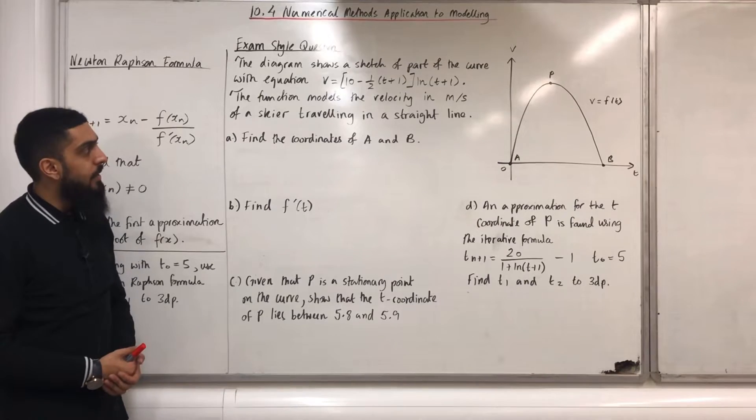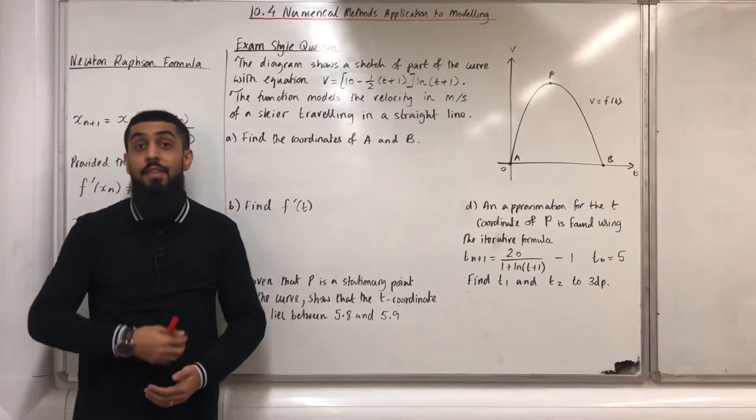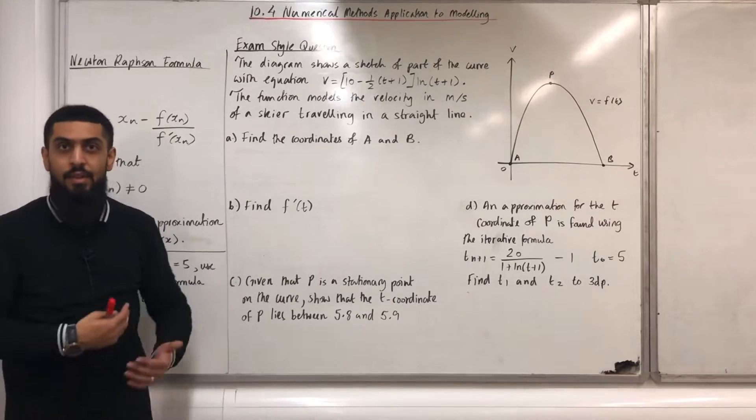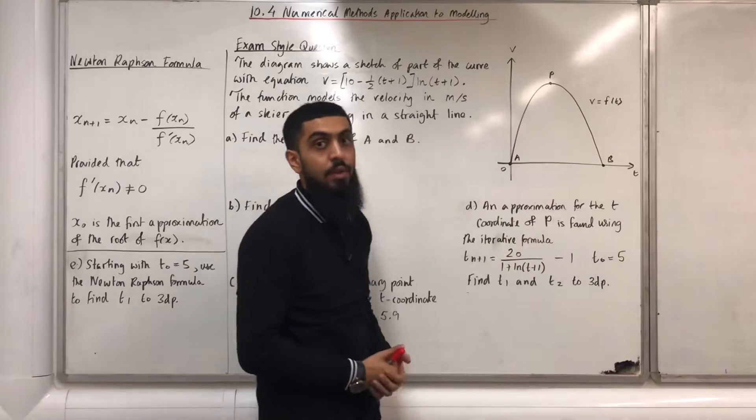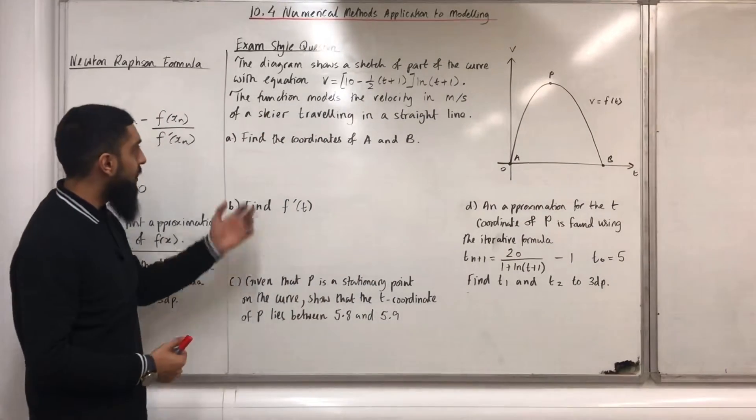Before we look at part A, the skier is traveling in a straight line but the velocity is changing. So as time is changing, the velocity is changing, therefore we have a curve, not a straight line. Let's go back to part A.